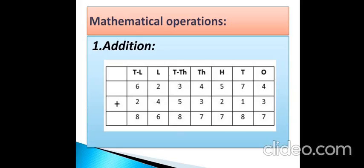Now we are going to see mathematical operations. There are four mathematical operations. The first one is addition. The numbers are 62,34,574 plus 24,53,213. By adding the numbers, the answer is 86,87,787. The symbol we use for addition is called plus.